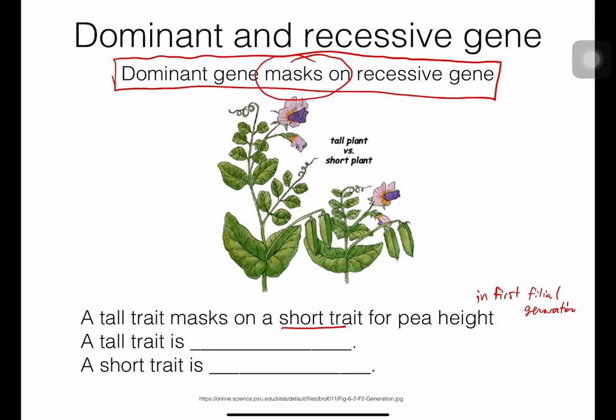So the tall trait becomes the dominant trait and the short trait becomes the recessive trait, because the tall trait masks the short trait.